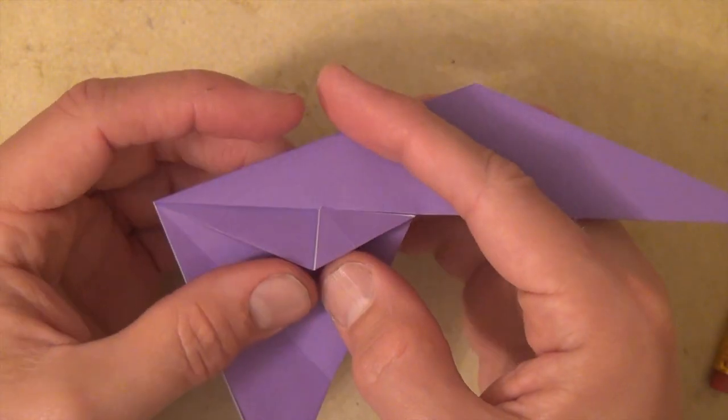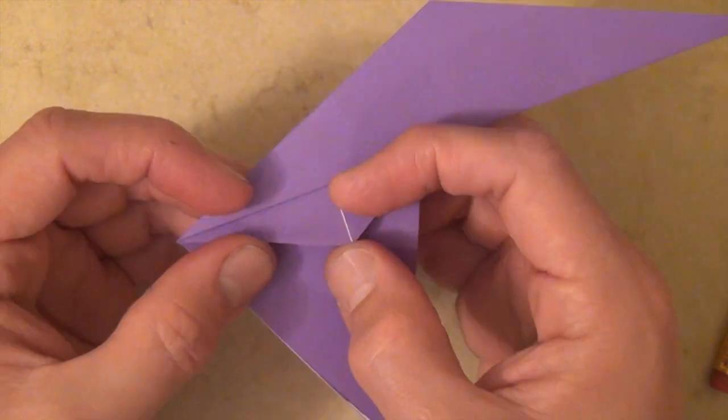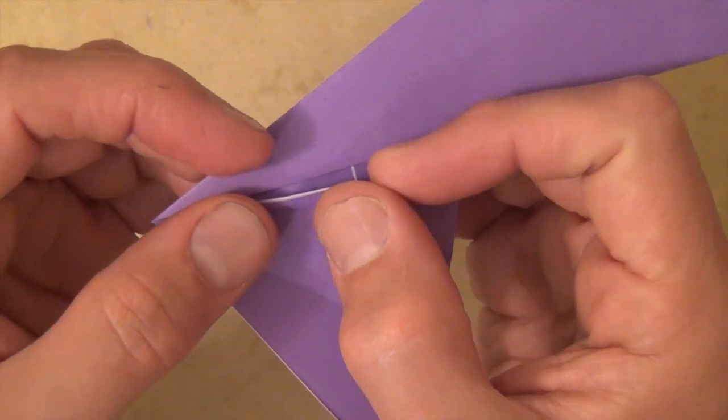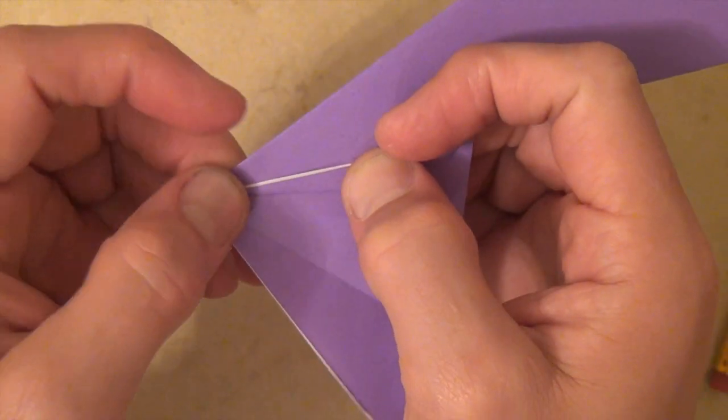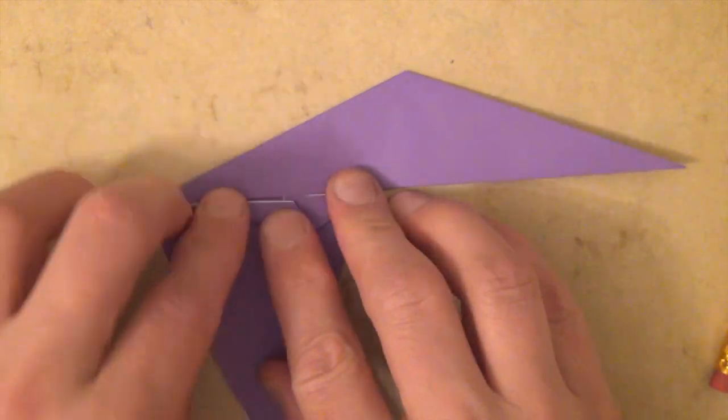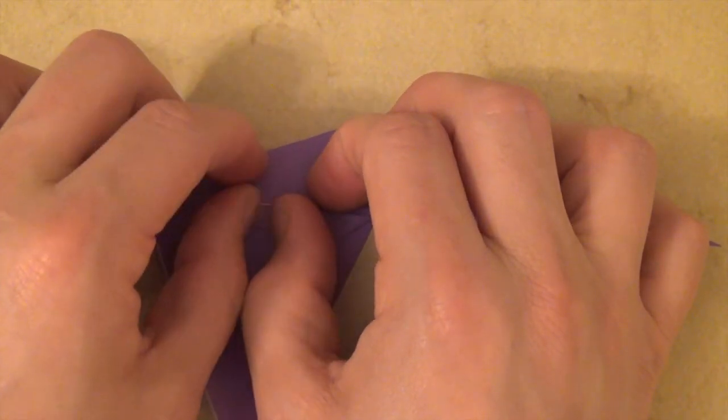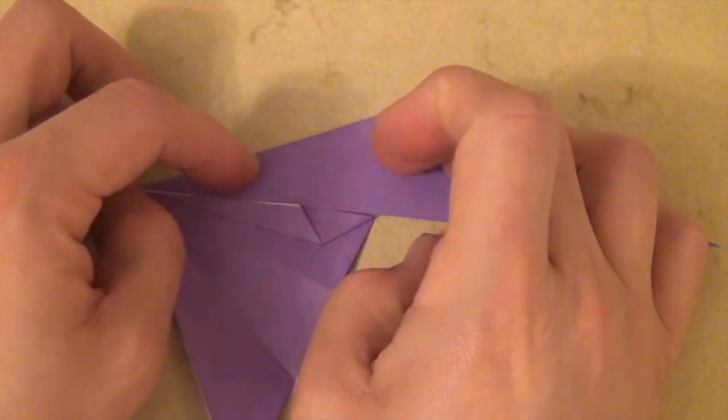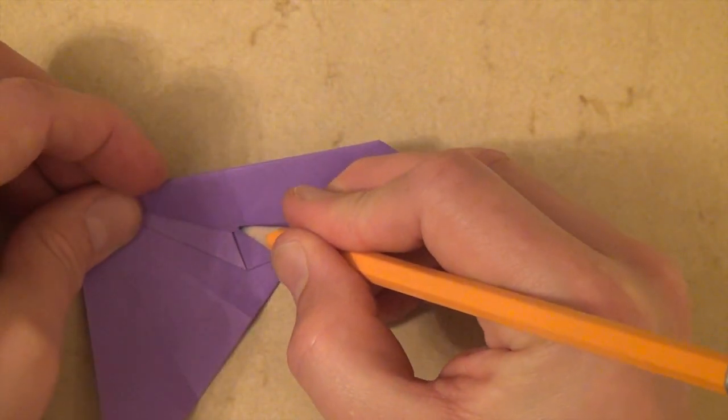And now we're going to take this edge and fold it to here. So just bring it up like that. Now there should be a crease. You can't really see it in this paper, so I'm going to draw it on.